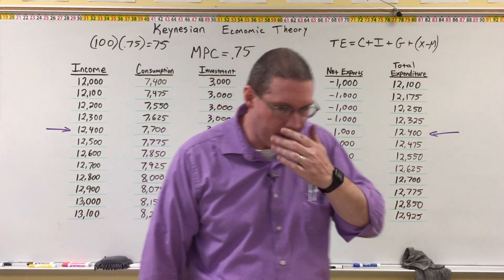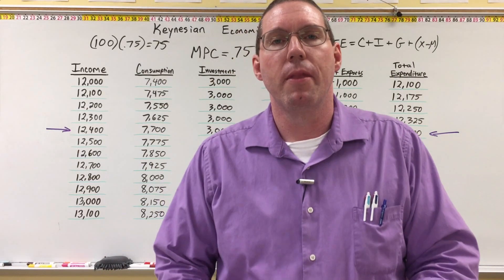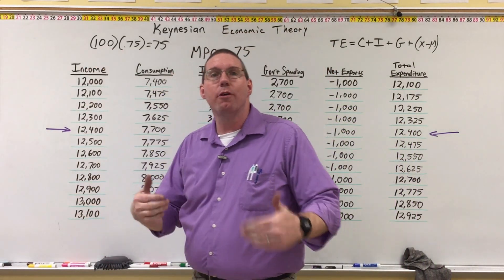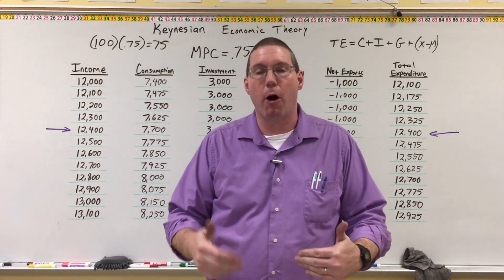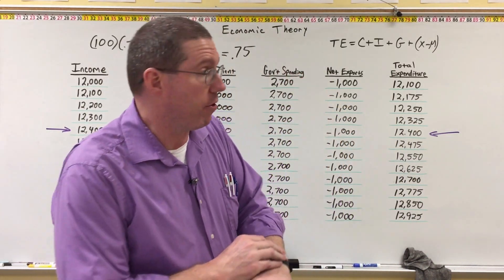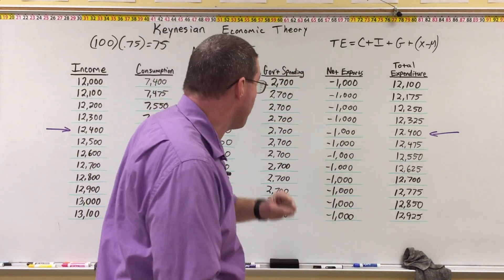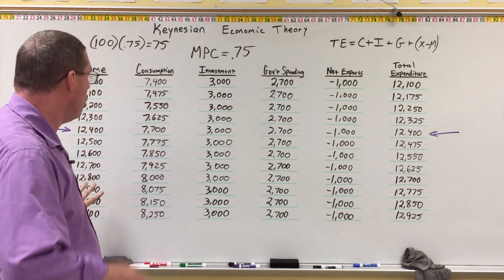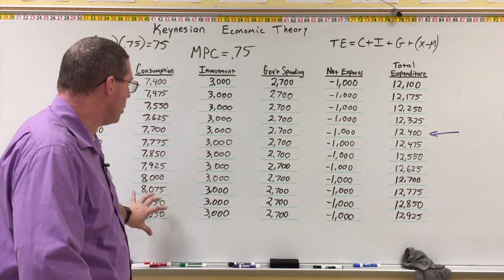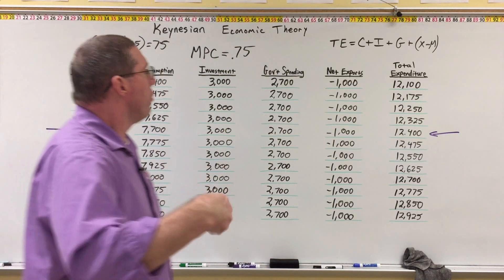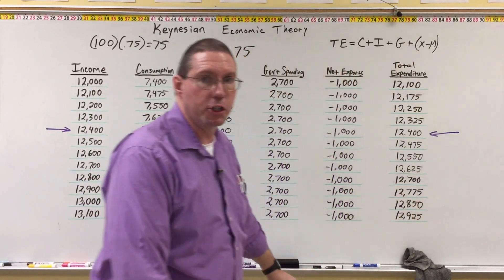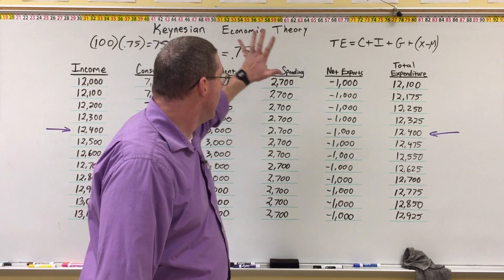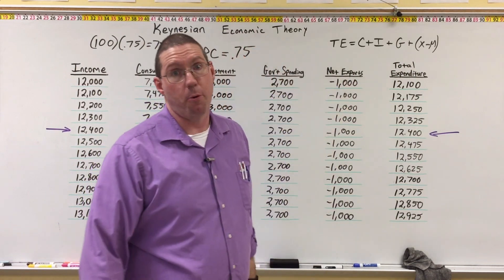The problem is how do we increase income? Here's the magic part. We're going to affect income, which will then affect consumption, which will then affect total expenditure, by changing investment, government spending, or net exports.